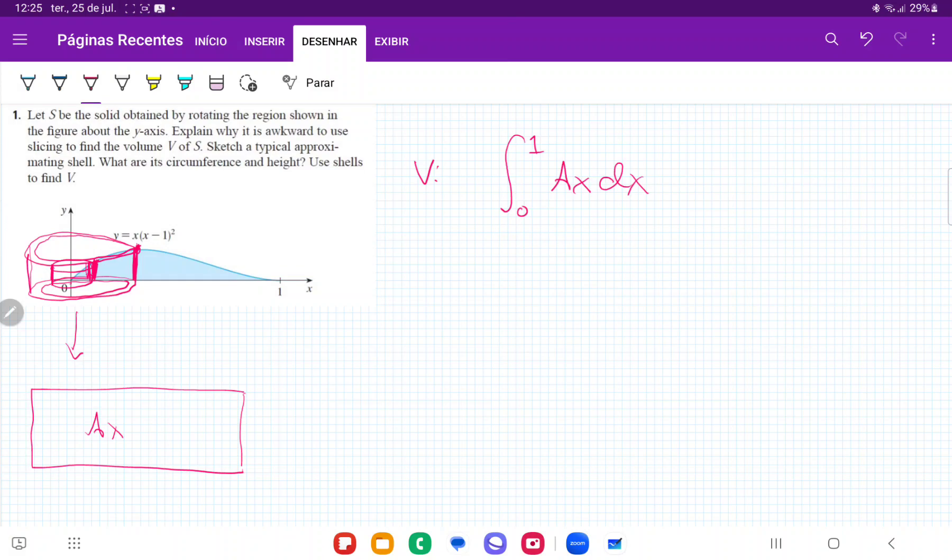So now we basically just have to find an expression for A(x), and then sum up all these cylinders that are revolved around the y-axis.